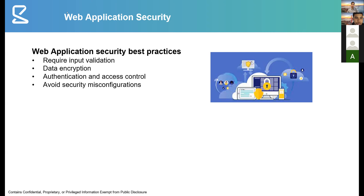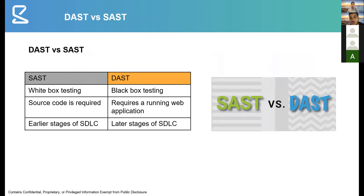Now discussing static application security testing, or SAST — one of the other types of application security testing. While this course focuses on DAST, both are performed during the software development life cycle. SAST is performed earlier in the SDLC, in the earlier stages where the software is still being developed. SAST is a type of white box testing, while DAST is a type of black box testing, simulating a user accessing the website from outside.